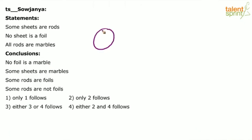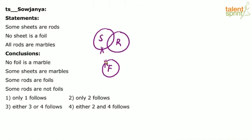Some sheets are rods — so, sheets here and rods. No sheet is a foil — let us say these are foils. No sheet is a foil, right? We put cross marks just to indicate that these two cannot touch each other. Foils and sheets cannot touch each other. And the last statement says all rods are marbles, so all the rods should come inside marbles. That's the basic diagram for the given statements.